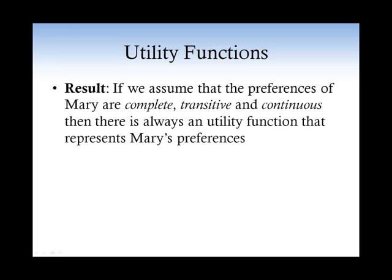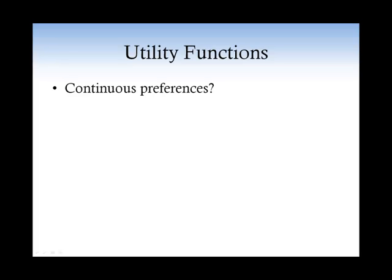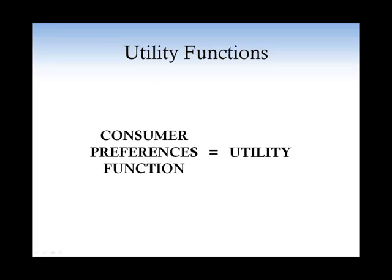To answer your question, if we assume that the preferences of Mary are complete, transitive, and continuous, then there is always a utility function that represents Mary's preferences. Continuity is a more technical assumption — loosely speaking, it means that the preferences of Mary do not jump around if we compare baskets that are very close. Assuming that Mary has reasonable preferences is equivalent to assuming that Mary's preferences are represented by a utility function.